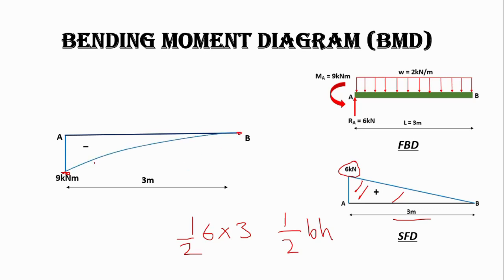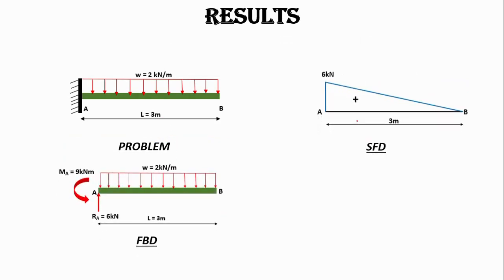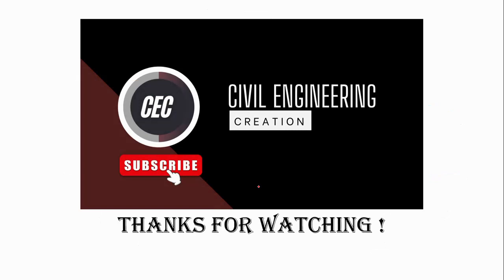This is our bending moment diagram with a maximum bending moment of 9 kilonewton meters acting at support A. This concludes today's lecture. Thanks for watching — please subscribe to my channel for new videos.